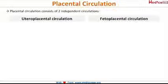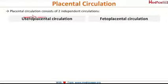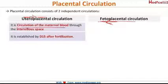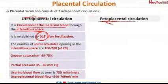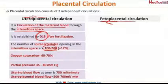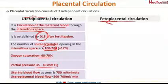We'll summarize the placental circulation, which has two parts: uteroplacental circulation from the mother to the placenta, and fetoplacental circulation from the placenta to the fetus. The uteroplacental circulation involves maternal blood flowing through the intervillous space, where maternal spiral arterioles open up. It is established by the 15th day after fertilization, with around 100 to 200 arterioles opening into the intervillous space. The oxygen saturation of blood in the intervillous space is 65 to 75%, and the partial pressure is 35 to 40 mmHg.